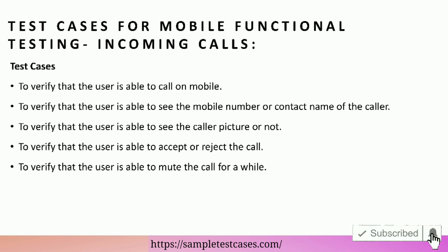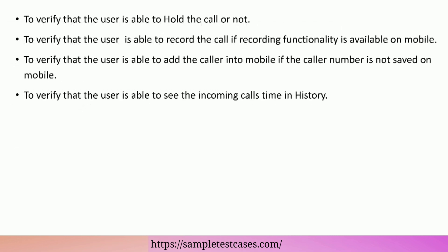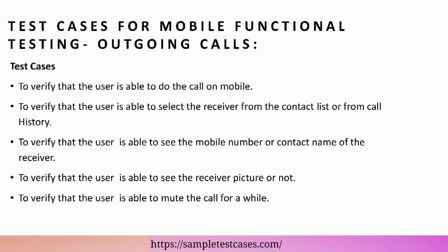Test cases for mobile functional testing — incoming calls. Test cases to verify that the user is able to receive a call on mobile. To verify that the user is able to see the mobile number or contact name of the caller. To verify that the user is able to see the caller picture or not. To verify that the user is able to accept or reject the call. To verify that the user is able to mute the call for a while. To verify that the user is able to hold the call or not. To verify that the user is able to record the call, if recording functionality is available on mobile. To verify that the user is able to add the caller into mobile, if the caller number is not saved on mobile. To verify that the user is able to see the incoming call's time in history.